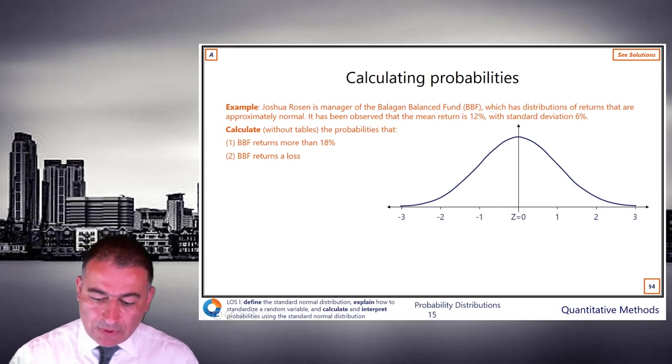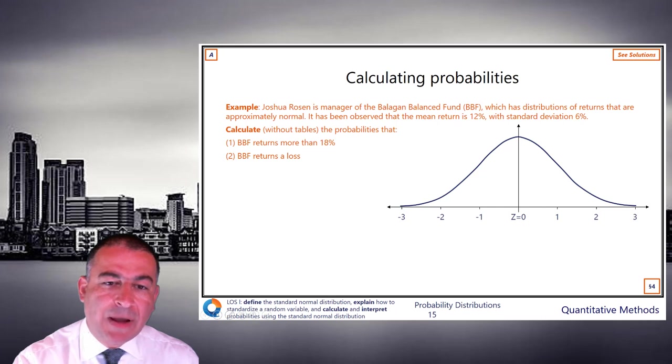Let's try one more example here. Joshua Rosen is manager of the Balagan Balanced Fund, BBF, which has distributions of returns that are approximately normal.